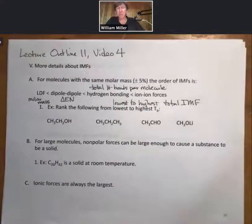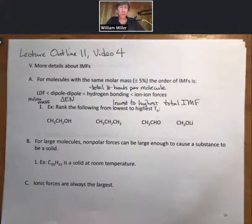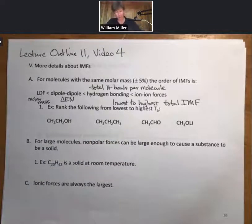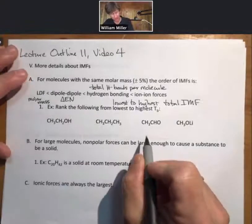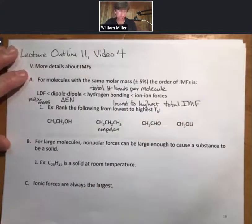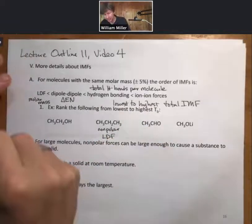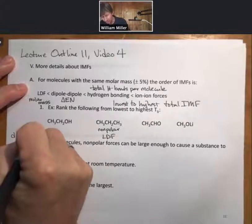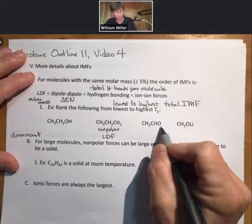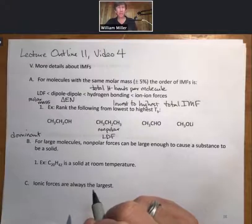If one has one hydrogen bond and the other molecule can form two hydrogen bonds with other molecules, then the one with two hydrogen bonds possible per molecule would be larger. A typical problem is: rank the following from lowest to highest boiling points. Our analysis goes like this: non-polar or anything that contains just carbons and hydrogens has only LDF as its dominant IMF.